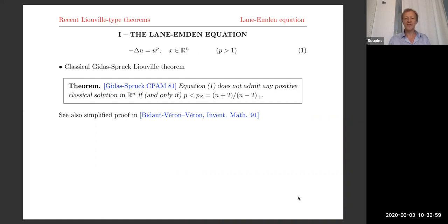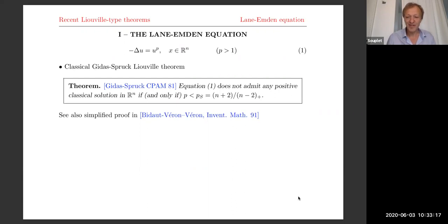Let me start with the most famous nonlinear Liouville theorem, which is the one by Gidas and Spruck 1981. It tells you that this equation has no positive classical solution in the whole space if and only if P is subcritical in the Sobolev sense. This is of course well known to everybody here. And there is also a very nice, simpler proof by Laurent and Marie in their classical paper of 1991.